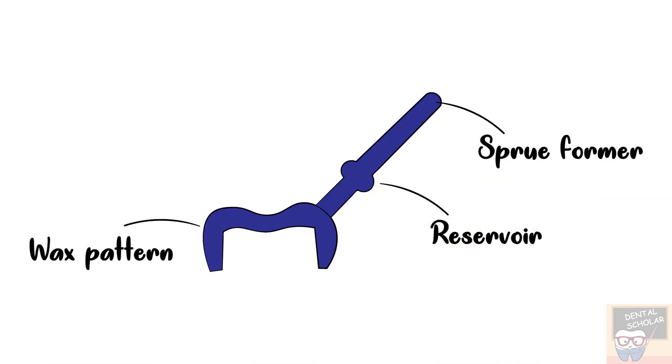The three components seen in this pattern are wax pattern of the crown, the sprue former, and the reservoir. The reservoir is important as it provides extra molten metal at the time of casting, so the porosities can be avoided at the junction of sprue former and crown.